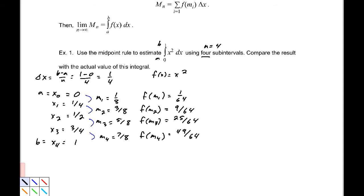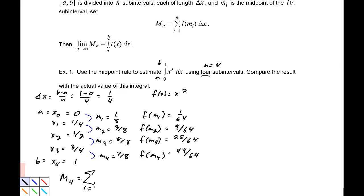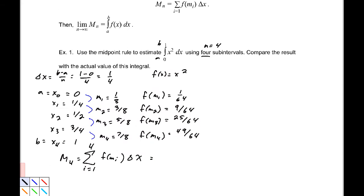This one would be 25/64 and our last one is 49/64. Now our rule says that M4, I'm just going back up to this, that's the sum of i equals 1 to 4 of f(mi) times delta x. That means we are going to add up each of those, so we've got our 1/4 multiplied by each of these: 1/64, 9/64, 25/64 and 49/64.